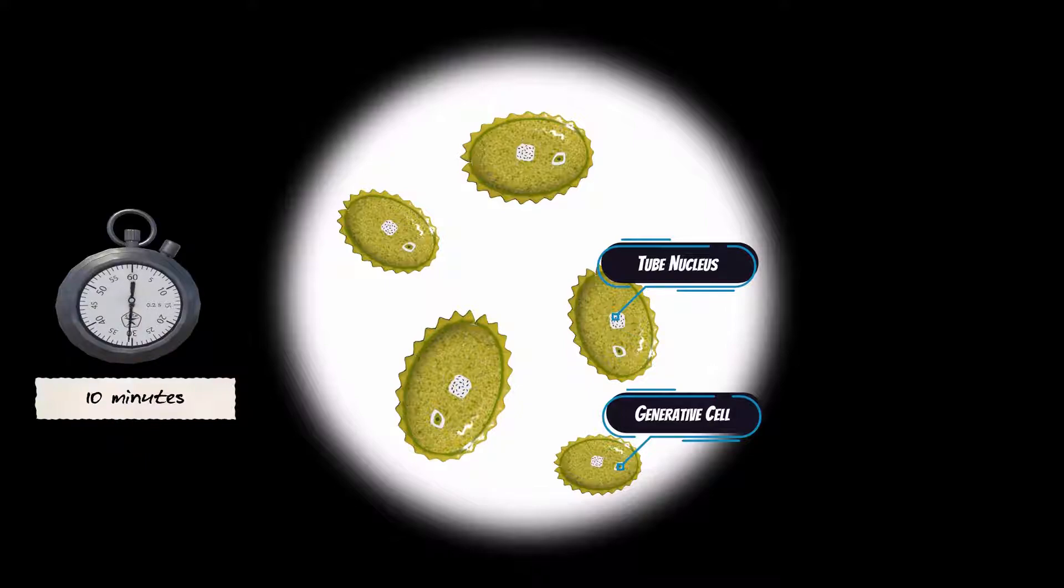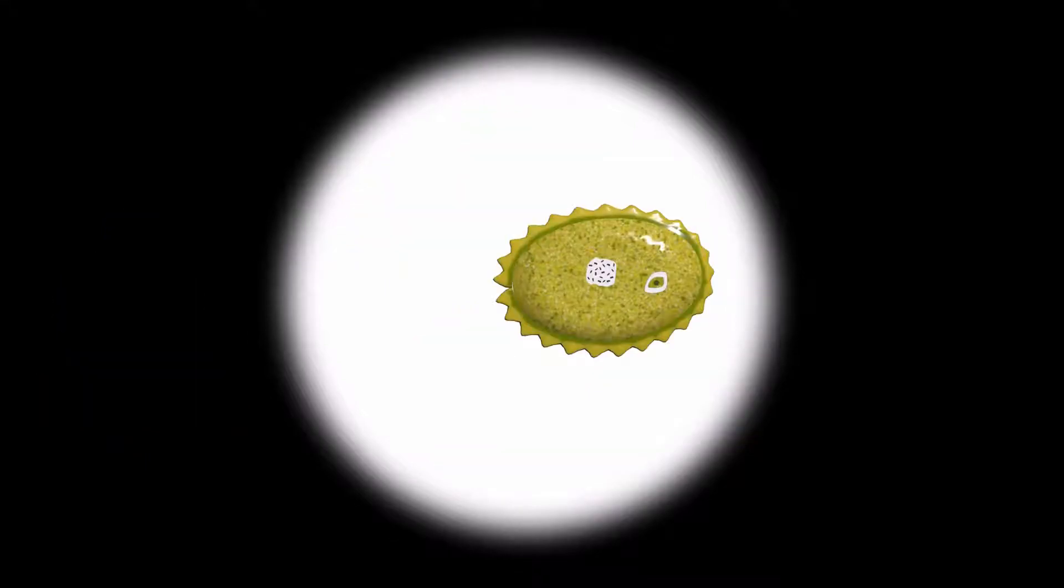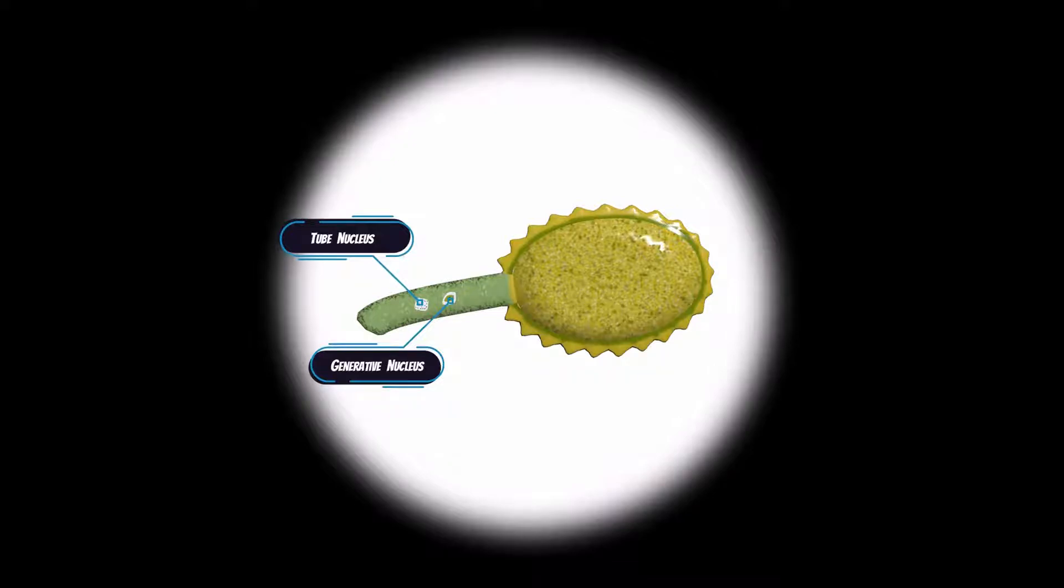In the nutrient, the pollen grain germinates. The tube cell enlarges and comes out of the pollen grain through one of the germ pores to form a pollen tube. The tube nucleus descends to the tip of the pollen tube.